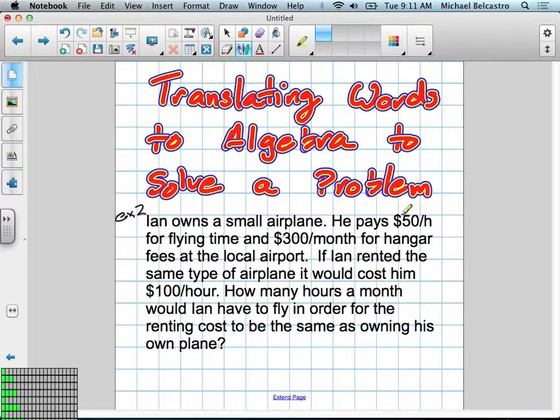He pays $50 an hour. So Ian owns a small plane. He pays $50 an hour for flying time. And $300 a month for hangar fees. We got that part. That's for the plane he owns. So we'll do yellow with the stuff he owns.